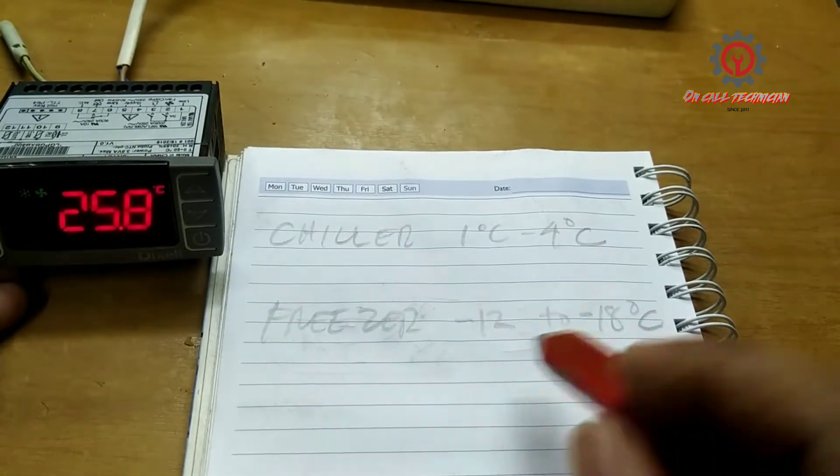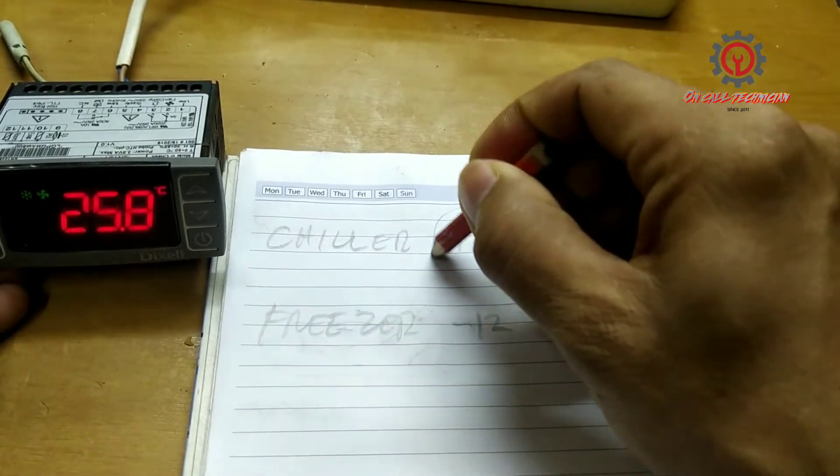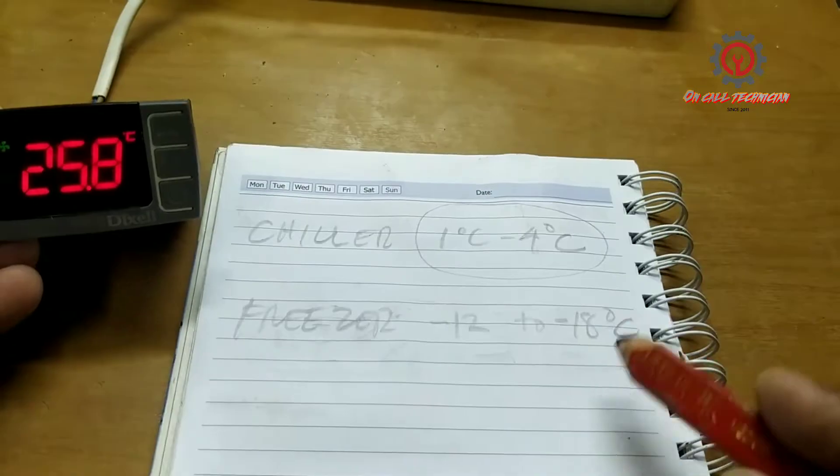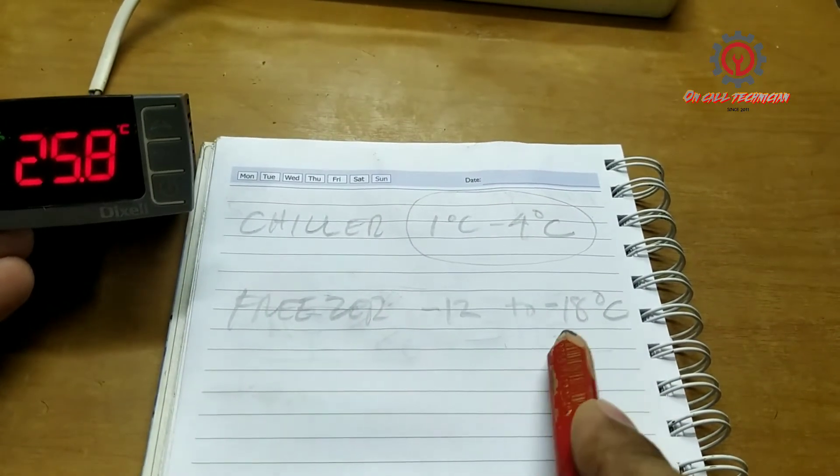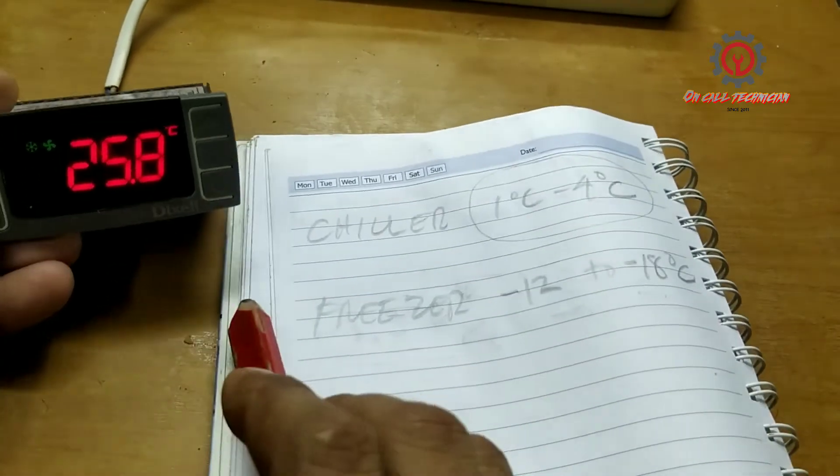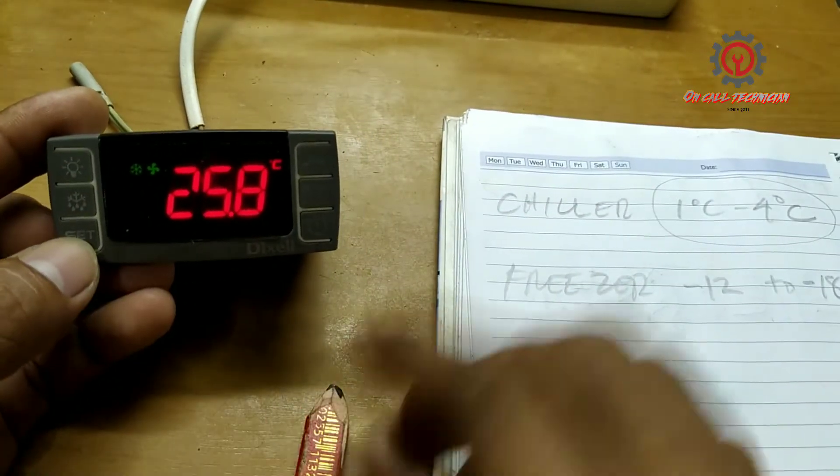We're going to change that with this setting. I'm going to show you that the setpoint for the freezer is negative 18, and I'm going to press the set button.